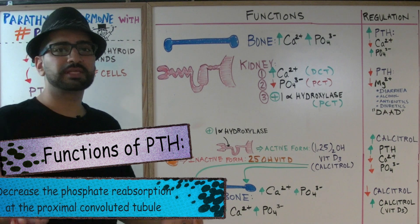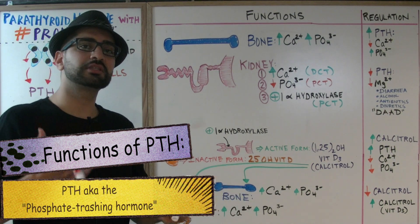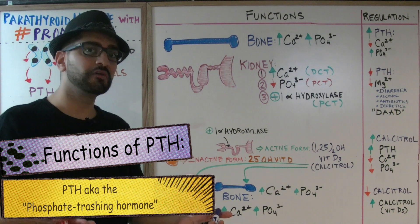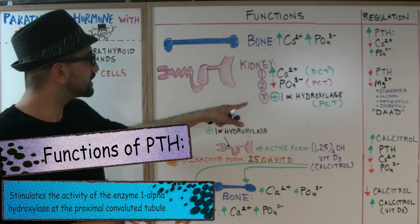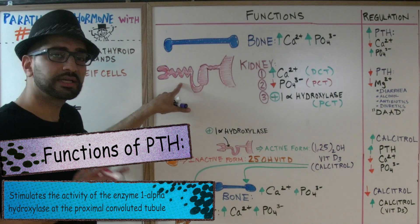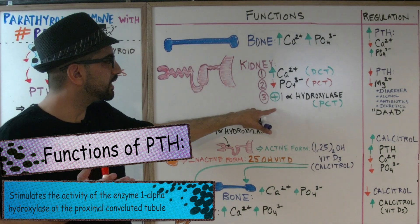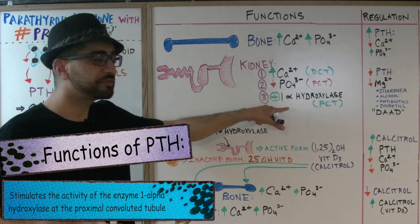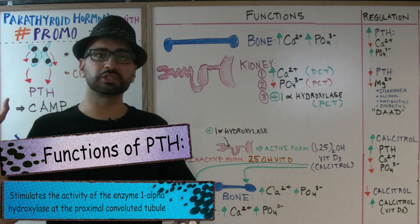Now the mnemonic makes sense: PTH — parathyroid hormone — is known as the 'phosphate trashing hormone' because it's trying to get rid of phosphate. The third important function is that it acts at the proximal convoluted tubule and stimulates the enzyme one-alpha hydroxylase, which is very important in the function and regulation of vitamin D.